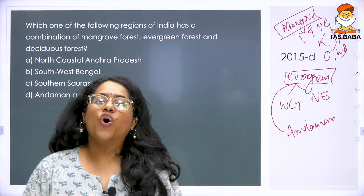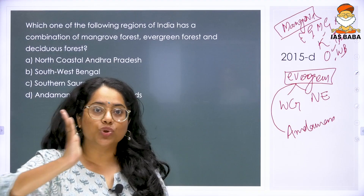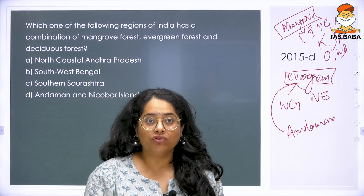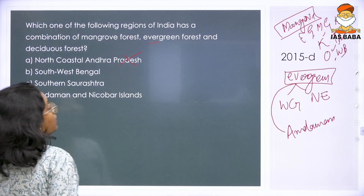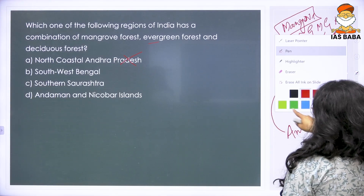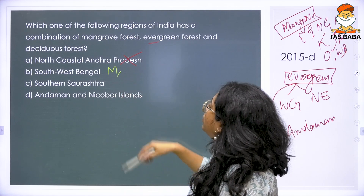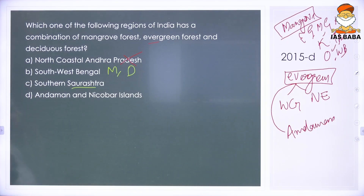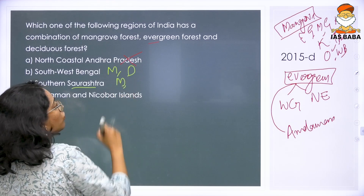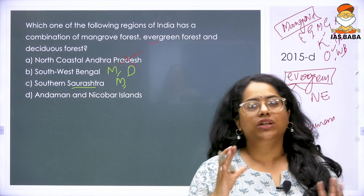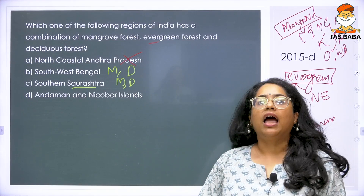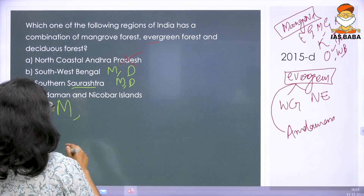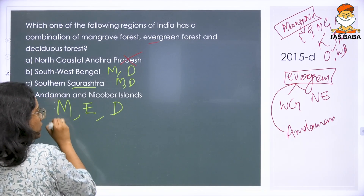Now look at all the options. North Coastal Andhra Pradesh — that is clearly coastal, so it will have deciduous and mangrove, but no evergreen. South West Bengal — you will have mangrove and deciduous in good amount, but not evergreen. South Saurashtra — that is primarily the Gujarat region. There you do have mangrove, but no evergreen, and deciduous in good amount. So mangrove and deciduous, but no evergreen. Andaman and Nicobar Islands has mangrove, evergreen, and deciduous areas.